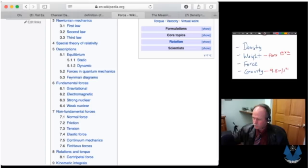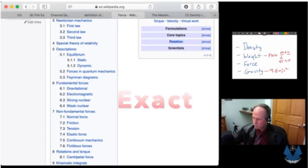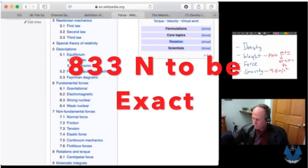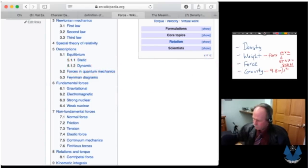So for example, my mass is 85 kilos and we got roughly 10 meters per second squared here. So that would be roughly 850 newtons. That would be my weight because weight is described as a force in newtons.